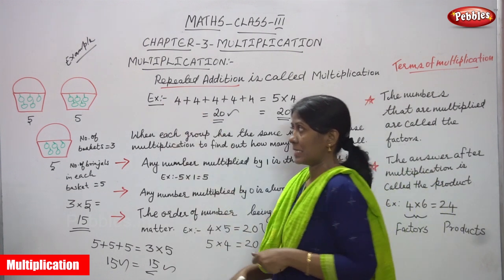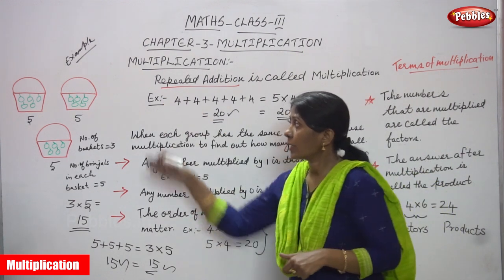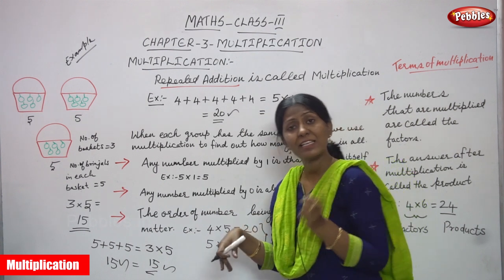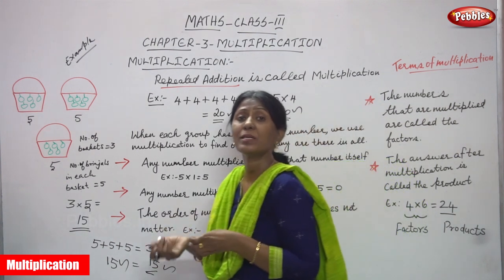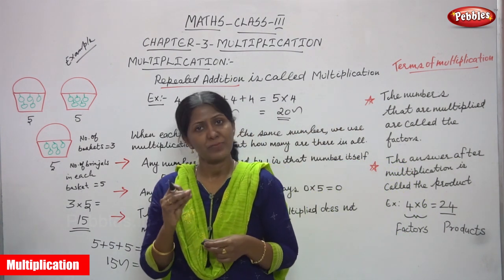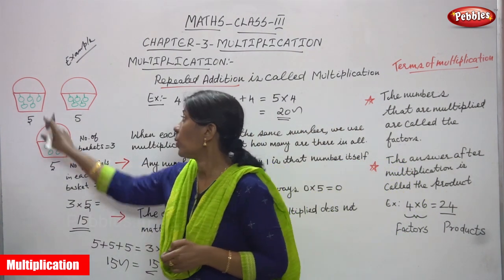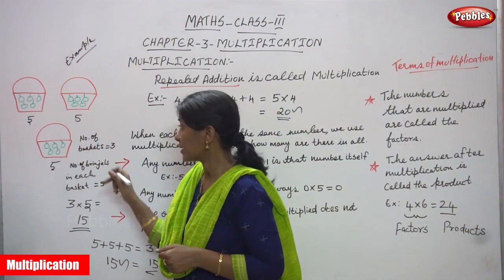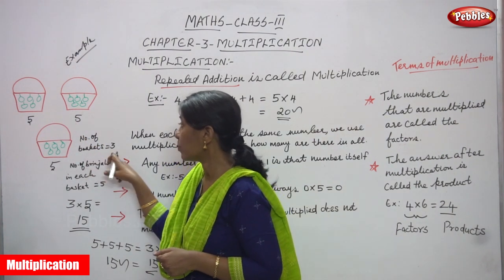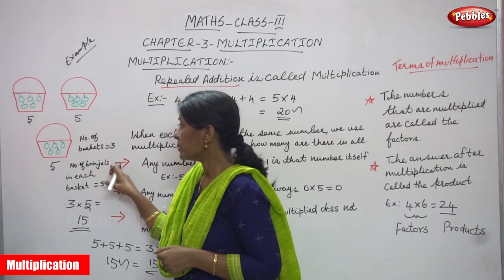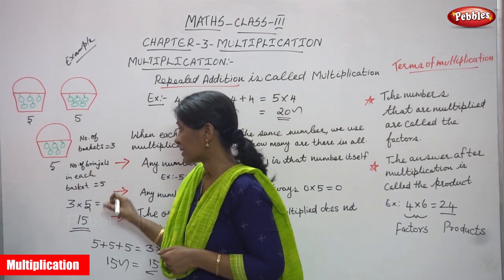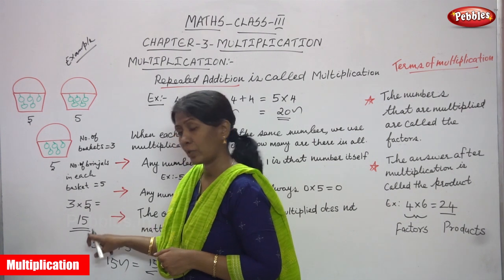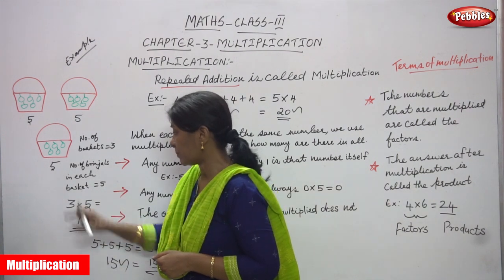Look at the example. How many baskets are there? There are 3 baskets. In each basket, how many brinjals are there? 5 brinjals — 1, 2, 3 baskets. Number of baskets is 3. Number of brinjals in each basket is 5. So 3 into 5, we can get 15. This is multiplication.